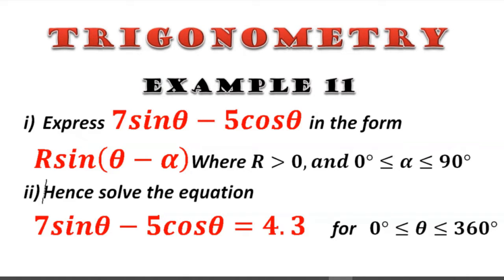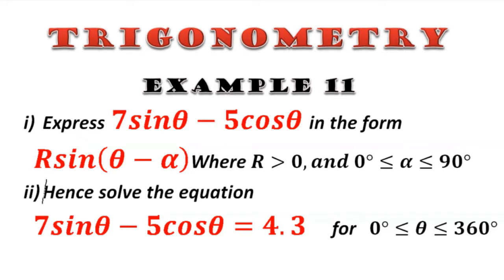Zambo number 11. Express 7 sin theta minus 5 cos theta in the form R sin(theta minus alpha), where R is greater than 0 and alpha is between 0 and 90 degrees. Then hence solve the equation 7 sin theta minus 5 cos theta equals 4.3, for theta between 0 and 360 degrees.